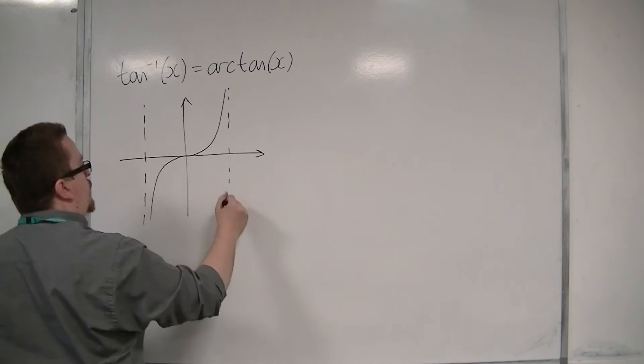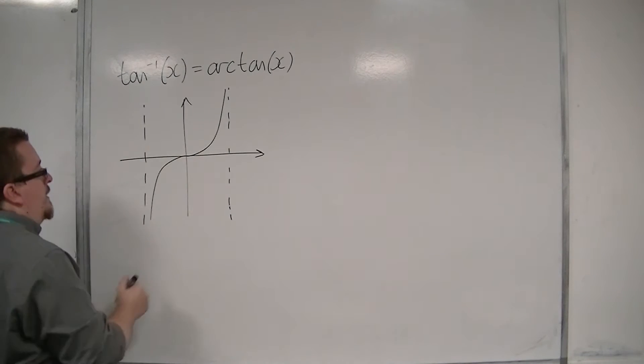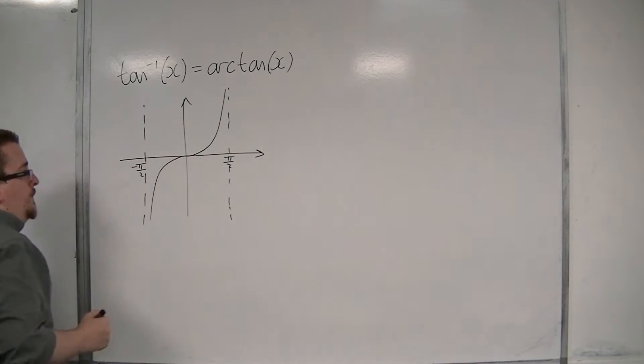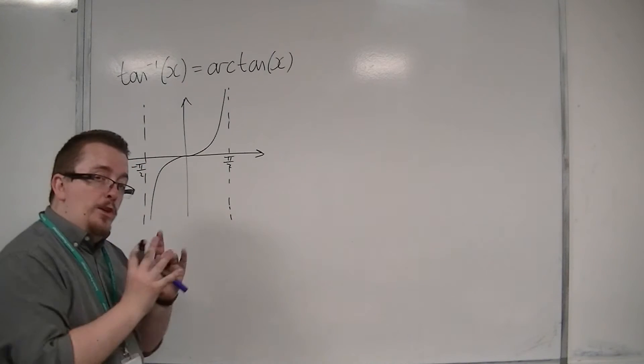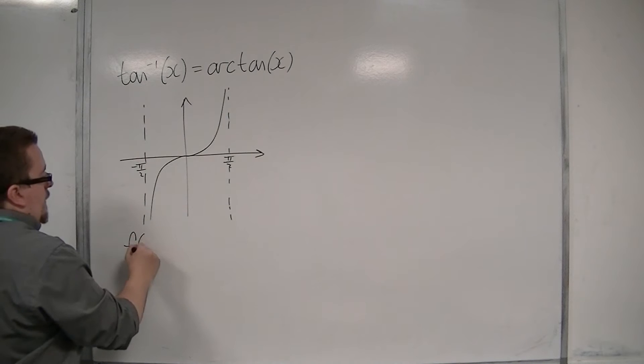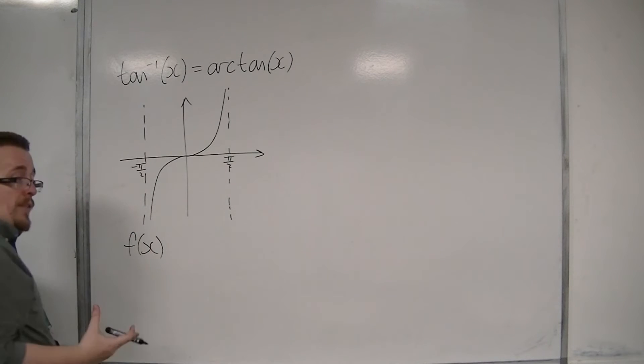So if I just draw that piece, this is an asymptote at pi over 2 and this is minus pi over 2, we can see that if we just look at that bit, then it covers the whole range of y and is now 1 to 1.